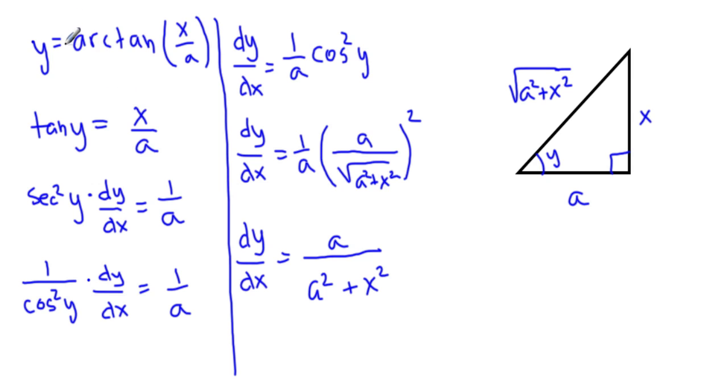So if I had a 1 over a right here, then this a would cancel. And that will be our general formula that we'll use. So the integral of 1 over a squared plus x squared dx will be 1 over a arctan of x over a plus c. This will be your general formula.